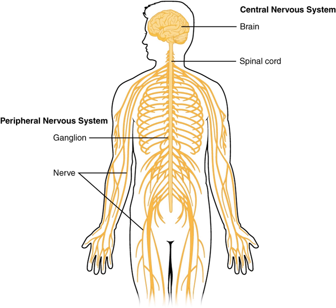A large portion of the brainstem is involved in autonomic control of the body. Such functions may engage the heart, blood vessels, and pupils, among others. The brainstem also holds the reticular formation, a group of nuclei involved in both arousal and alertness.